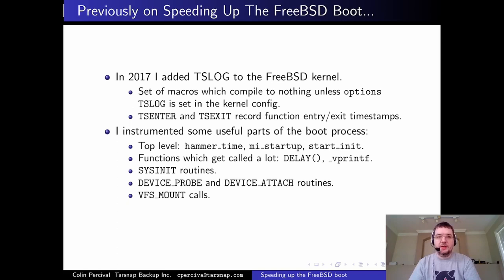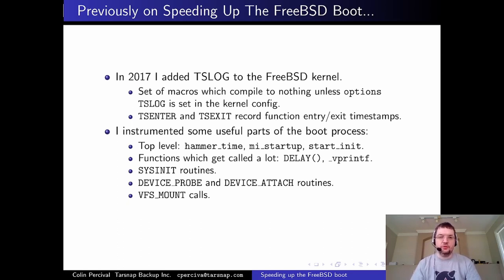TSLog works mostly by having two macros — TSEnter and TSExit — which you use to mark the entry point and exit point from functions. They record the timestamp and the name of the function being called. These are purely C macros, so there's no compiler magic. For any function you care about, you insert these macros at all entry points and all exit points from the function.